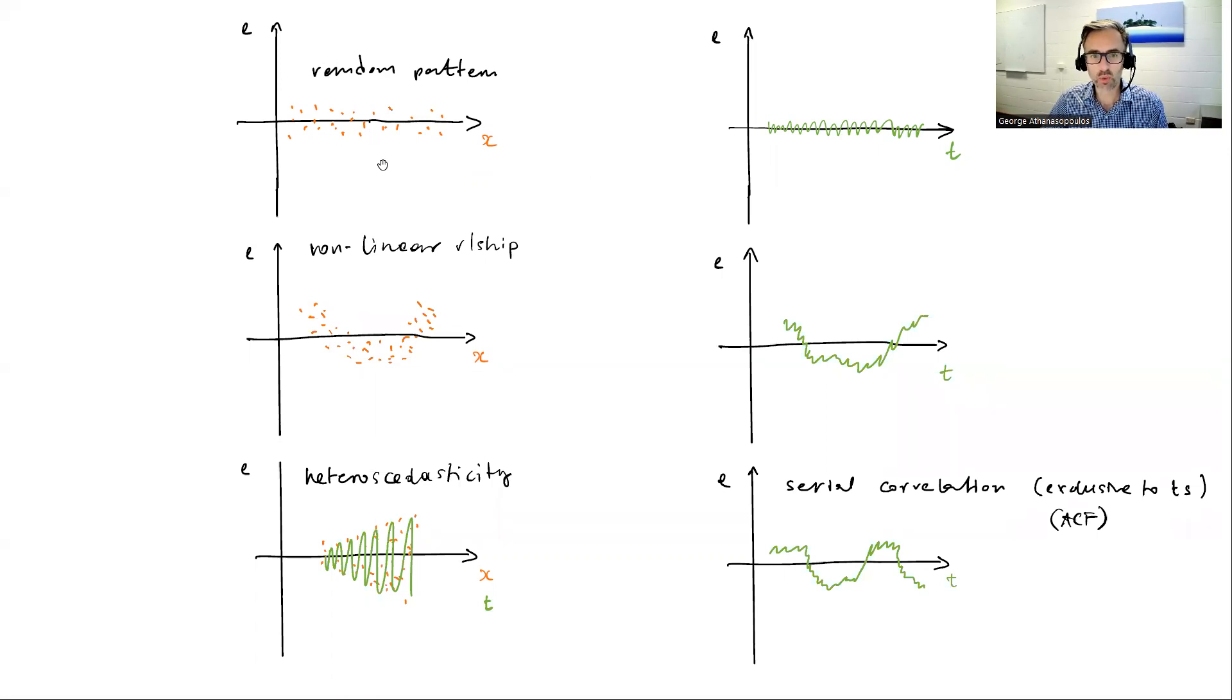So these are well-behaved residuals. So in these plots, we want to see no patterns. No patterns is a good thing. If I plotted my residuals against time, this is what a random white noise process would look like, hand-drawn, let's say.